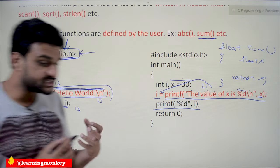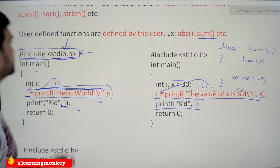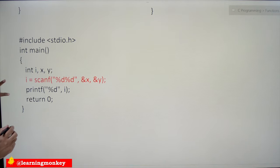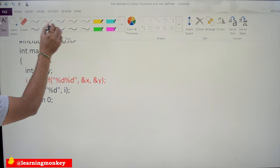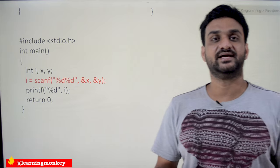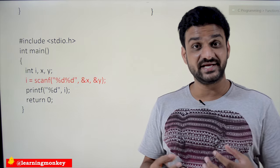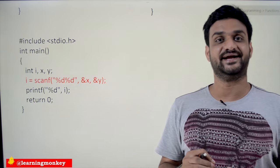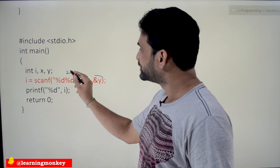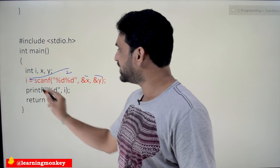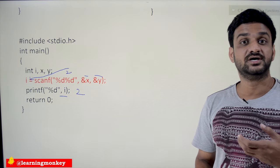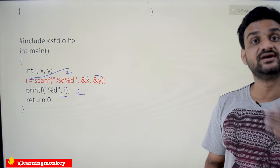Similarly, what is the return value of scanf? Let's understand that also. scanf will return the number of successfully scanned elements. After scanning, how many inputs are successfully scanned — in this case we are going to scan two elements, so this is going to return 2, and this 2 will get assigned to I. If you print I, it is going to print 2. This is how printf and scanf return their values.